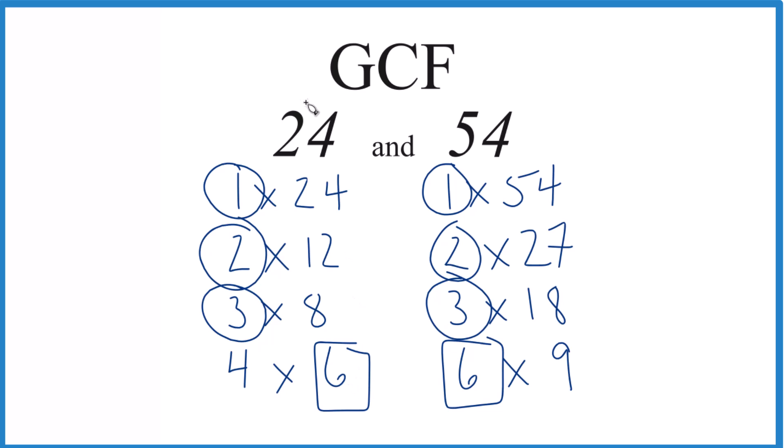And it looks like that's the largest number that goes into both 24 and 54. So the GCF for 24 and 54 is 6. There are other ways you could do this, like prime factorization, but unless you have a big number, this works pretty well. This is Dr. B, and thanks for watching.